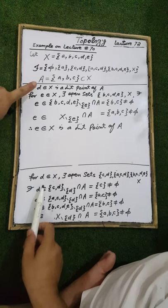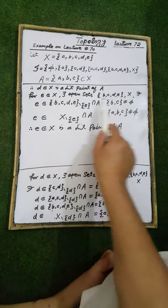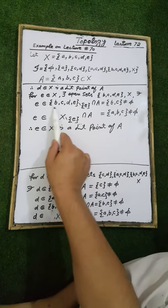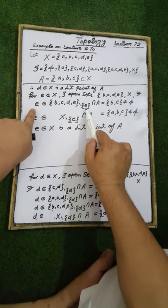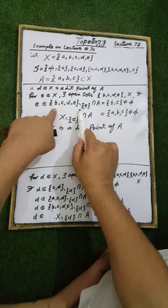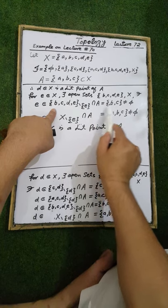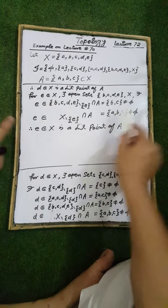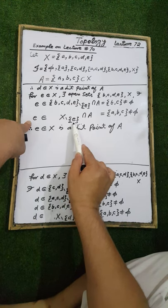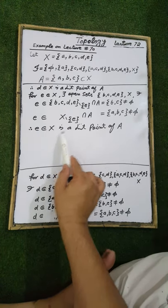Therefore, the element d belonging to the ground set X is a limit point of the set A. For an element e belonging to the ground set X, there exist open sets containing element e. The open set X minus the set containing element e, intersected with A, is the set containing elements a, b, c, which is non-empty. Therefore, the element e belonging to X is a limit point of the set A.